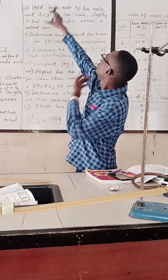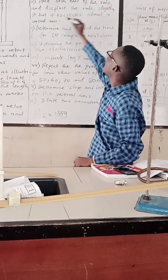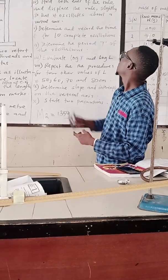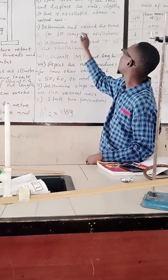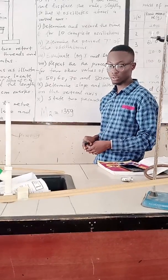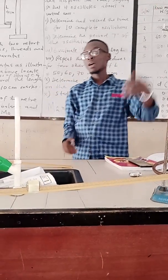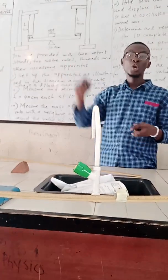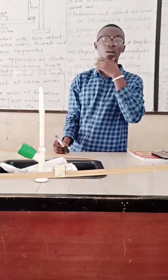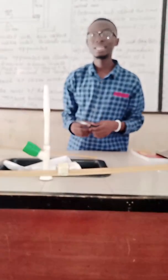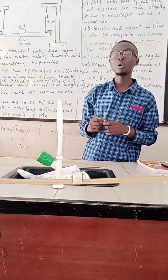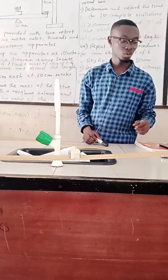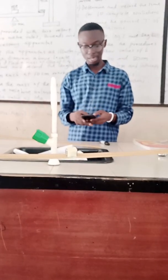They said hold both ends of the rule and displace the rule slightly so that it will oscillate about the vertical axis. Determine and record the time t for 10 complete oscillations. As we have placed the 100 gram mass at the center of gravity, we are going to displace the ruler by a certain distance so that we can record the time for 10 complete oscillations.